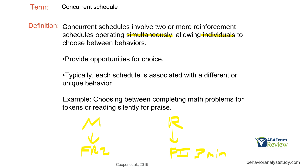Remember the matching law — behavior is going to follow where reinforcement is. When concurrent schedules are active, the learner will likely engage in both schedules but at the rate of reinforcement. An FR2 is likely to produce more reinforcement than a three-minute interval schedule, so the learner will probably complete more math problems, but they won't stop reading entirely. They might do two math problems, read for praise, two more math problems, read again — concurrent schedules create multiple behaviors happening back and forth with reinforcement delivered on different schedules simultaneously.